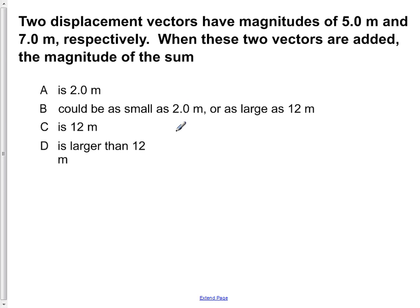So if we have our vector, say this one is 5 meters, and can be oriented in any possible direction, and then we also have a red vector here, which is 7 meters, which can also be oriented in any direction.